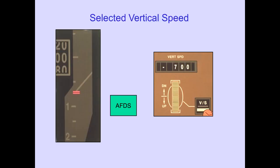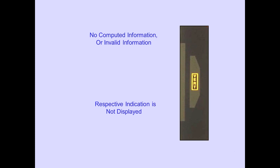The vertical speed pointer is displayed when set on the Autopilot Flight Director mode control panel. When no computed information is received or the information is determined to be invalid, the respective indicator is not displayed. If the vertical speed information is invalid, a flag is displayed.